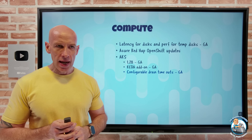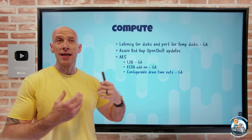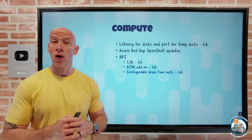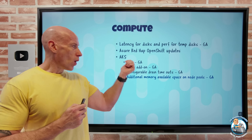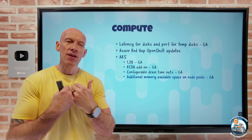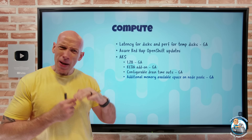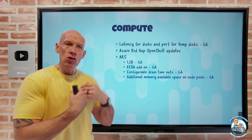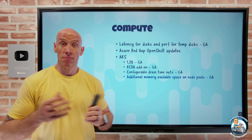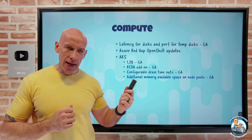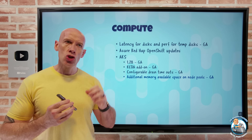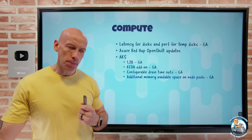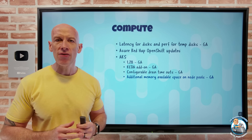Configurable drain timeouts have gone GA. The default is 30 minutes, but if upgrade operations are taking longer, you can now increase that drain timeout — up to 24 hours maximum. Also, with 1.28 and above, you're going to get more memory available for workloads — about 20% more at most. Kubernetes used to be quite aggressive with memory reservations for core components, but 1.28 introduces different priority mechanisms, which allows it to relax those reservations. So basically, more memory available for your pods.